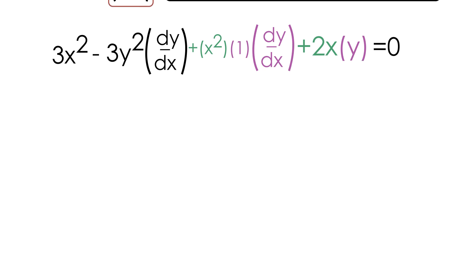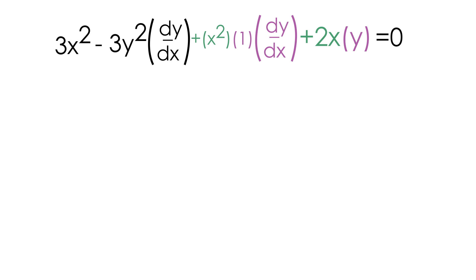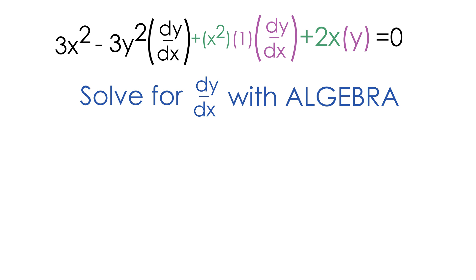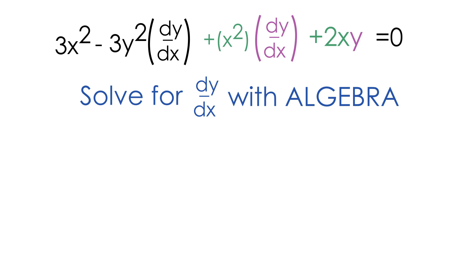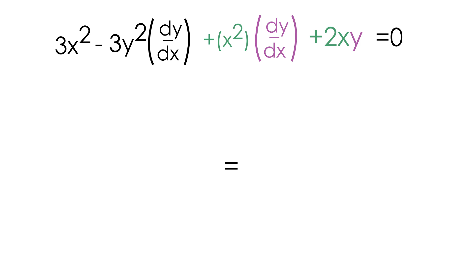Now that we've taken the derivative of every term in our equation, the only thing left to do is solve for dy/dx, which just requires a little algebra. First, simplify x squared times 1 times dy/dx — that gives x squared dy/dx. We can also simplify 2x times y as 2xy. Now we need to get all dy/dx terms on one side and all other terms on the other side.